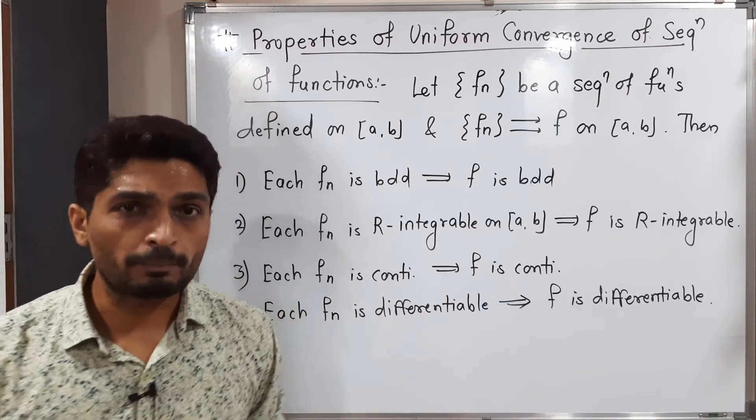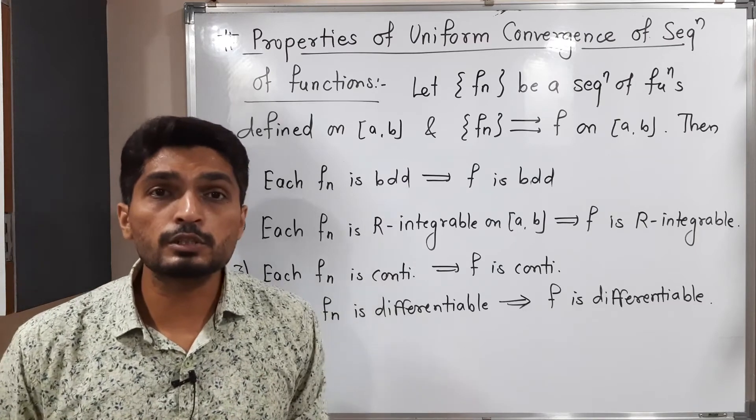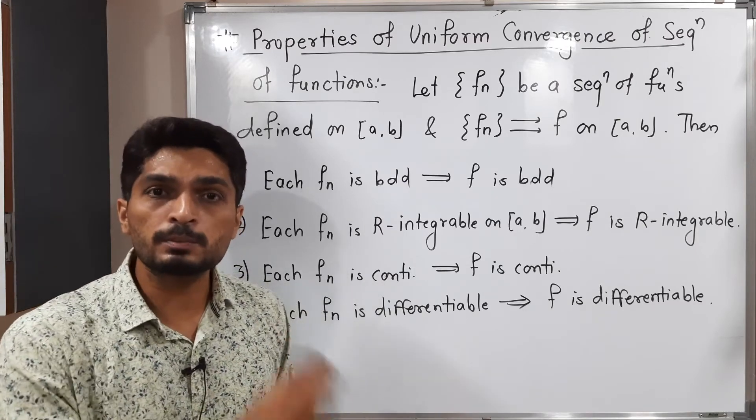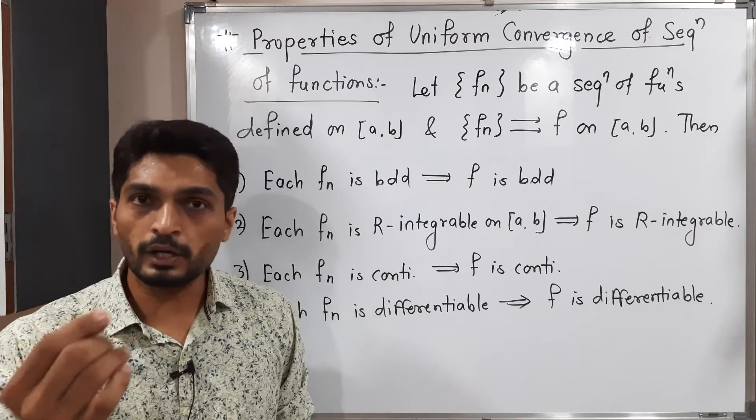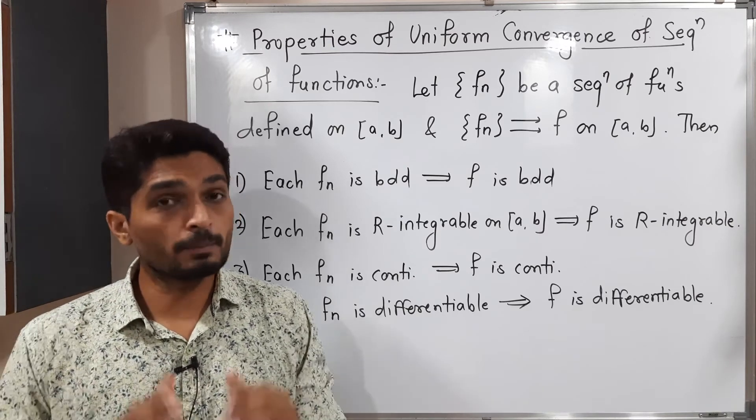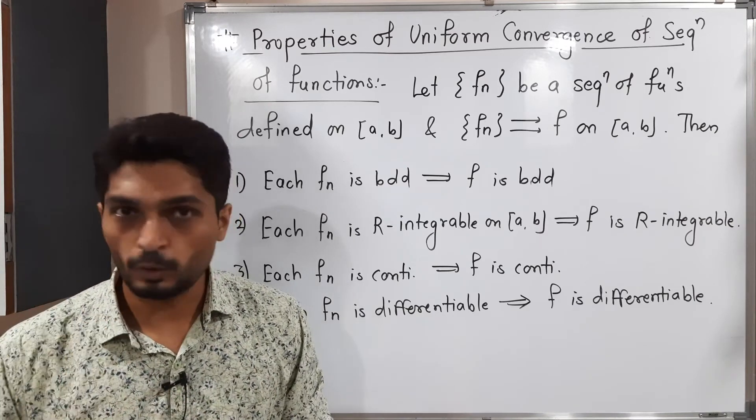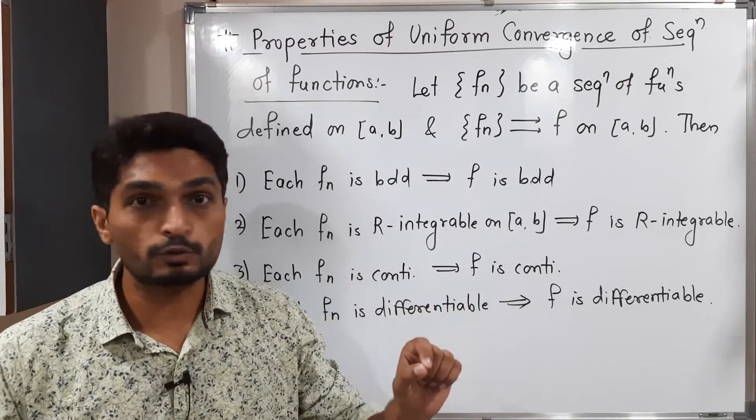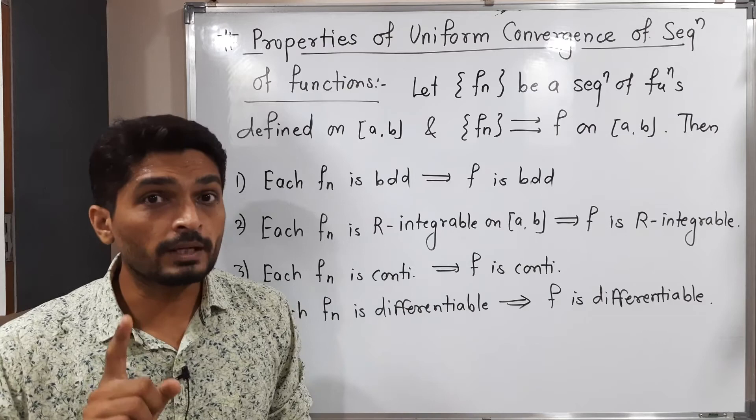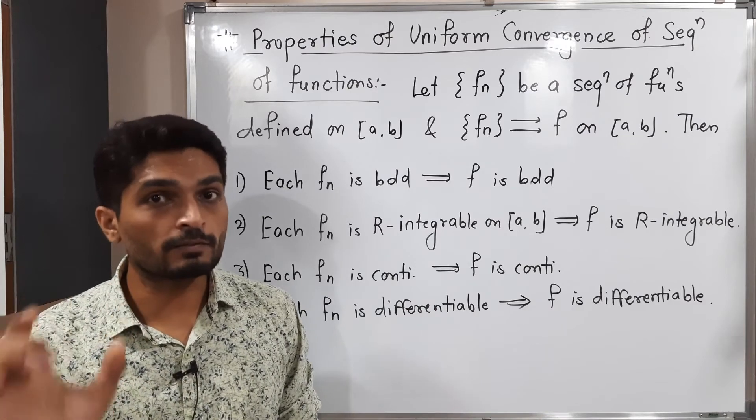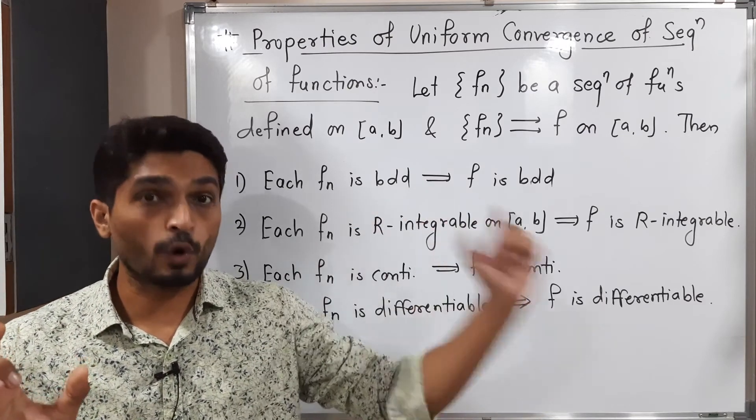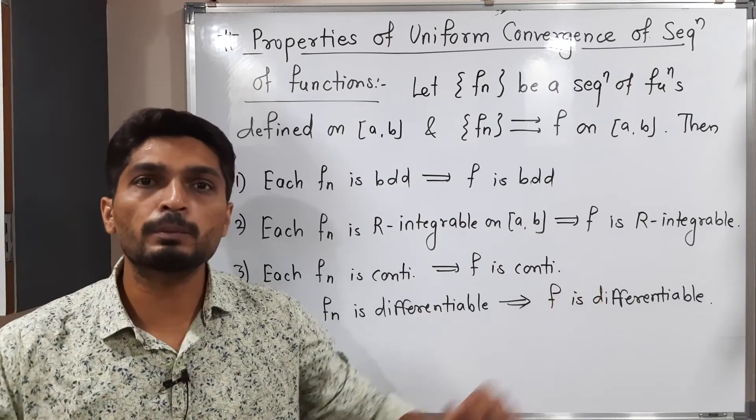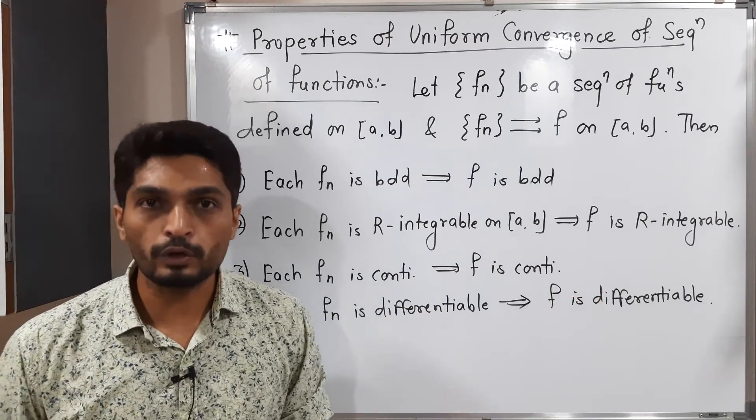When we solve a problem where we have to prove that convergence is not uniform, these properties are very helpful. Let me give you one example. Suppose we have a sequence {fn} which converges to F pointwise, and we have to prove it is not uniform convergence. If each fn is continuous but F is not continuous, then 101% that convergence is not uniform.